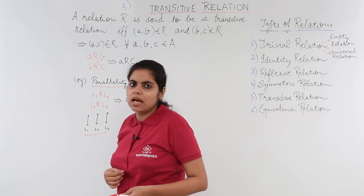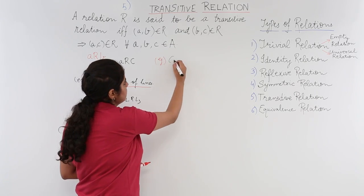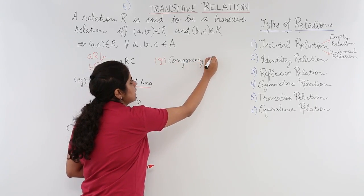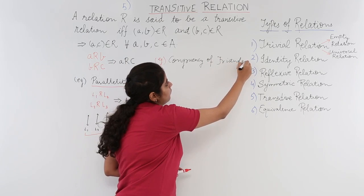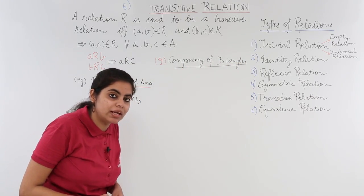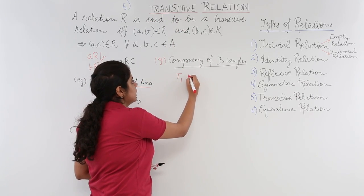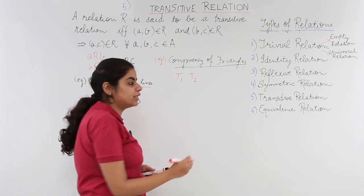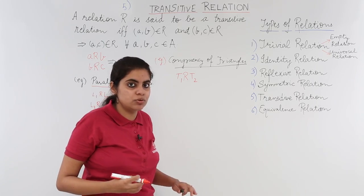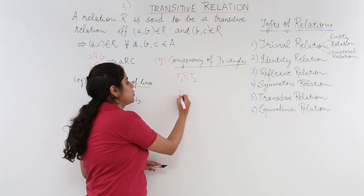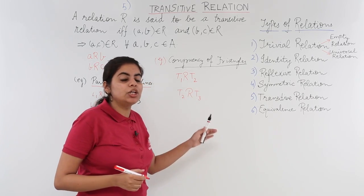A second example for the same could be congruency of triangles. So the second example is congruency of triangles. Just as we saw parallelism of lines, now we can use congruency of triangles to understand the transitive relation. Let the relation be congruency of triangles. Let us have two triangles T1 and T2 such that T1 is related to T2, meaning T1 is congruent to T2. Also suppose T2 is related to T3, meaning T2 is congruent to T3. Here T1, T2, T3 are the triangles.